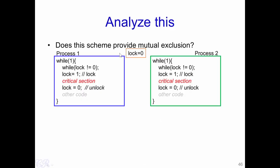Let us start with this particular example. We have two processes, process 1 and process 2, and both are having similar critical sections that access the same shared data. We also have a shared variable called lock, shared between process 1 and process 2. What each of these processes do is two things. First, in order to lock the critical section, the process would first execute a while loop until lock becomes 0. When lock becomes 0, the process would enter and set lock to 1 and then execute the critical section. At the end of the critical section, the process would set lock to 0 in order to unlock the section. The question is: does this particular scheme achieve mutual exclusion?